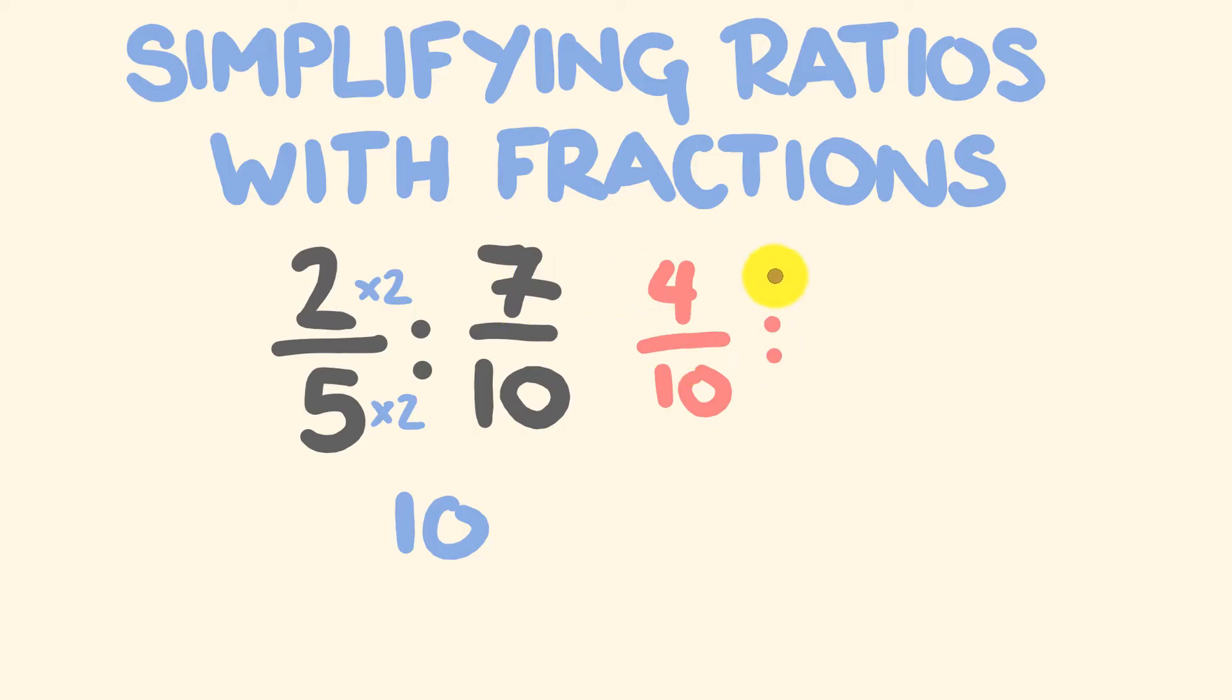This is compared to 7 tenths, which stays exactly the same. Now what we can do is multiply both these fractions by 10, literally just getting rid of the under 10 bit here. Our ratio becomes 4 is to 7. And you can't do much more with that, so that's as simple as you'll get it.